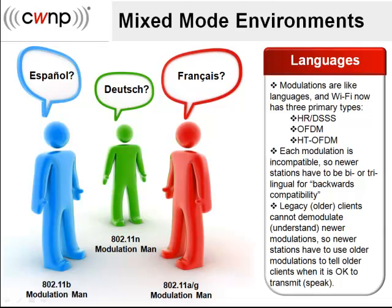A good analogy is human languages. 802.11b only speaks one language — let's say Spanish. 802.11g stations know both Spanish and French; they understand 802.11b Spanish, but 802.11b doesn't understand them when they speak French. Then 802.11n comes along and speaks Spanish, French, and German, but neither 802.11b nor 802.11g understand German. In a mixed-mode environment, stations must coordinate their transmissions in a way that is understood by all. They must notify one another of their intent to speak in a different language, allowing other stations to be polite and wait, even if they don't understand what's being said.